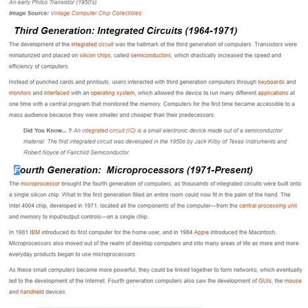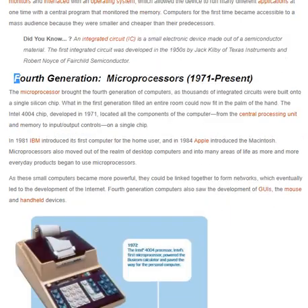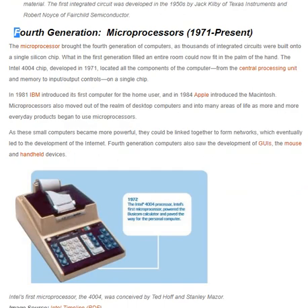Fourth generation — microprocessors, 1971 to present. The microprocessor brought the fourth generation of computers, as thousands of integrated circuits were built onto a single silicon chip. What in the first generation filled an entire room could now fit in the palm of the hand. The Intel 4004 chip, developed in 1971, located all the components of the computer — from the central processing unit and memory to input/output controls — on a single chip.